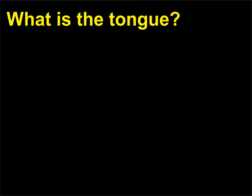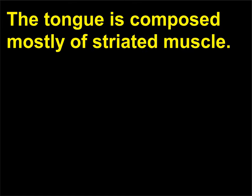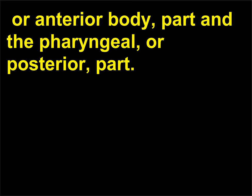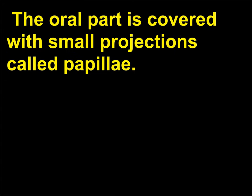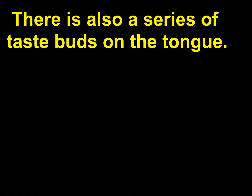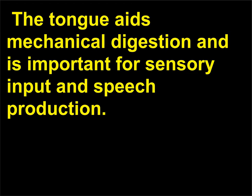What is the tongue? The tongue is composed mostly of striated muscle. It is divided into two major sections: the oral (or anterior) body part, and the pharyngeal (or posterior) part. The oral part is covered with small projections called papillae, which give the tongue its characteristic rough texture. There is also a series of taste buds on the tongue. The tongue aids mechanical digestion and is important for sensory input and speech production.